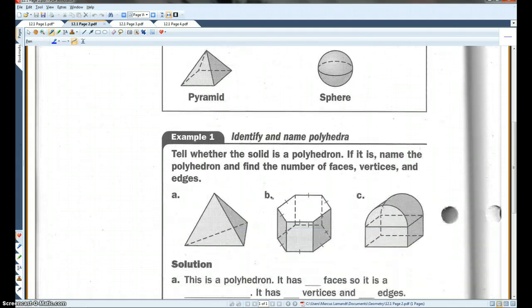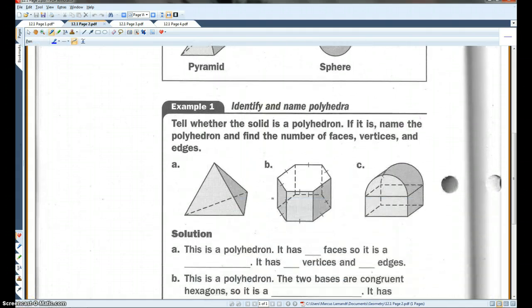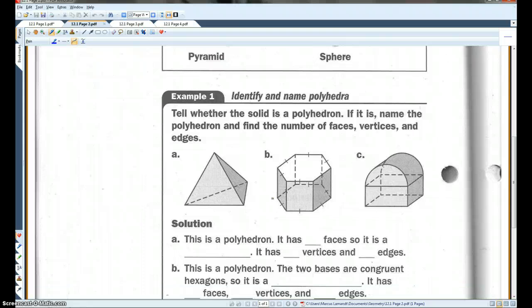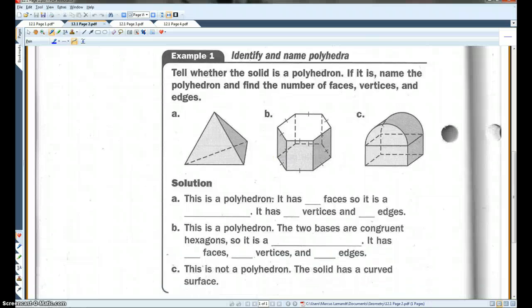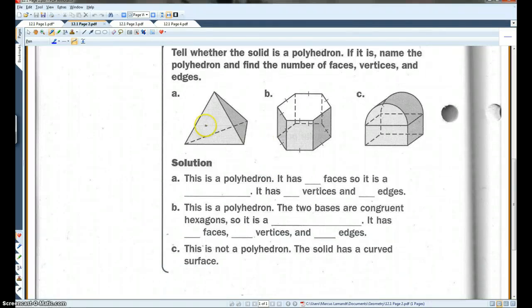Example one. Identify and name polyhedra. Tell whether the solid is a polyhedron. If it is, name the polyhedron and find the number of faces, vertices, and edges. Alright, A has one, two, three, four faces. So it is a tetrahedron.